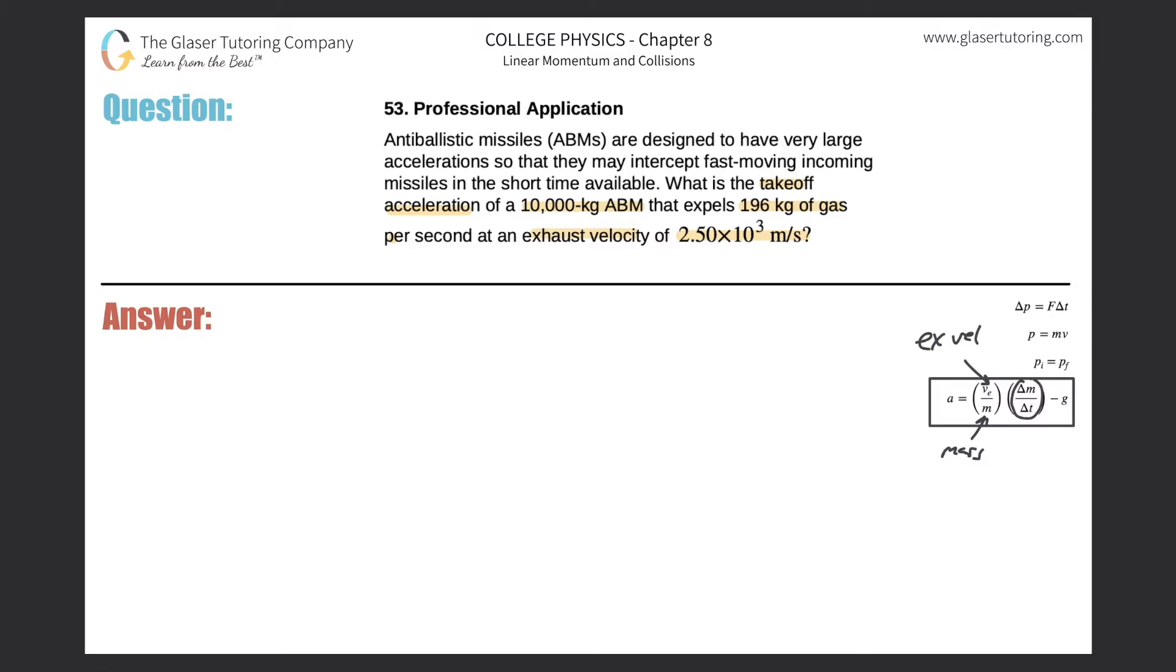We'll be talking about the rate of weight being lost essentially. In the problem it says expels 196 kilograms of gas per second. So this is the change in mass per time, and this will be in kilogram per second. And then G is your old friend, 9.80.